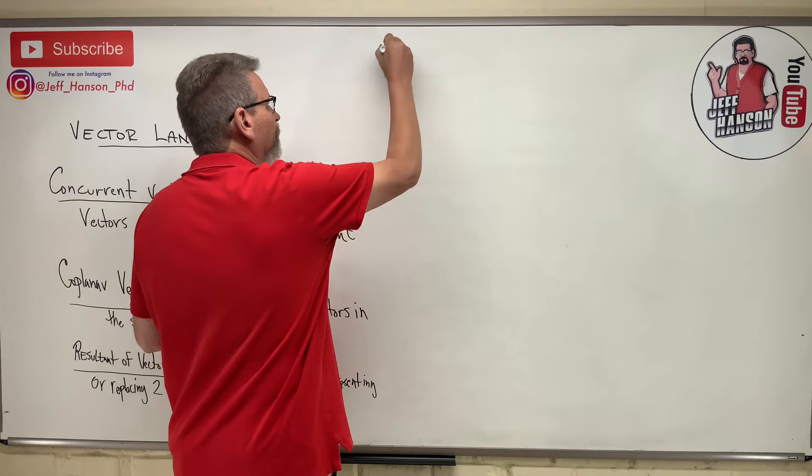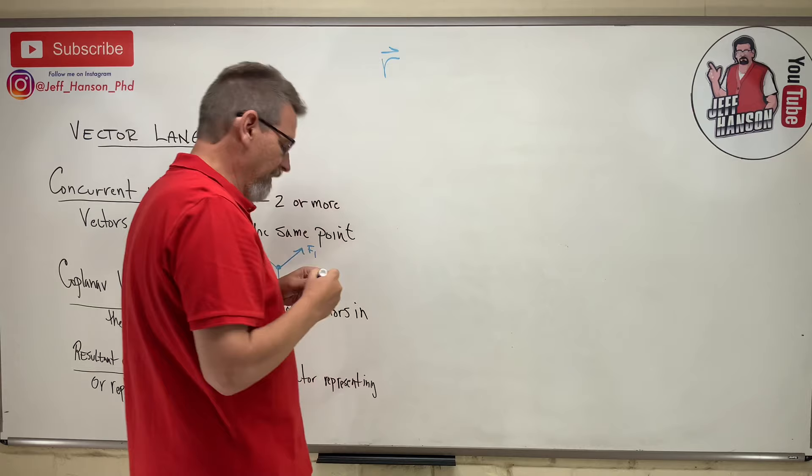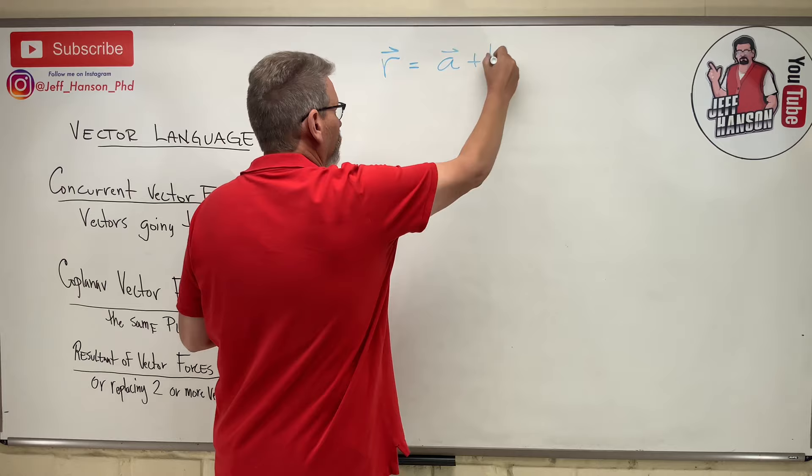So typically you'll see the resultant vector like this vector R, or maybe a capital R. It doesn't matter. So let's say that R is going to equal vector A plus vector B.